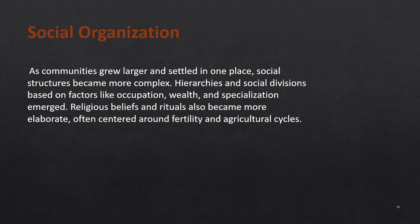Social Organization. As communities grew larger and settled in one place, social structures became more complex. Hierarchies and social divisions based on factors like occupation, wealth, and specialization emerged. Religious beliefs and rituals also became more elaborate, often centered around fertility and agricultural cycles.